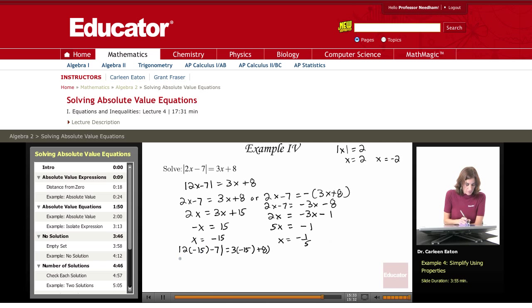So I have 2 times negative 15, which is negative 30 minus 7, equals 3 times negative 15 is negative 45 plus 8. So this gives me the absolute value of negative 37 equals, well, negative 45 plus 8 is negative 37. The absolute value of negative 37 is 37.